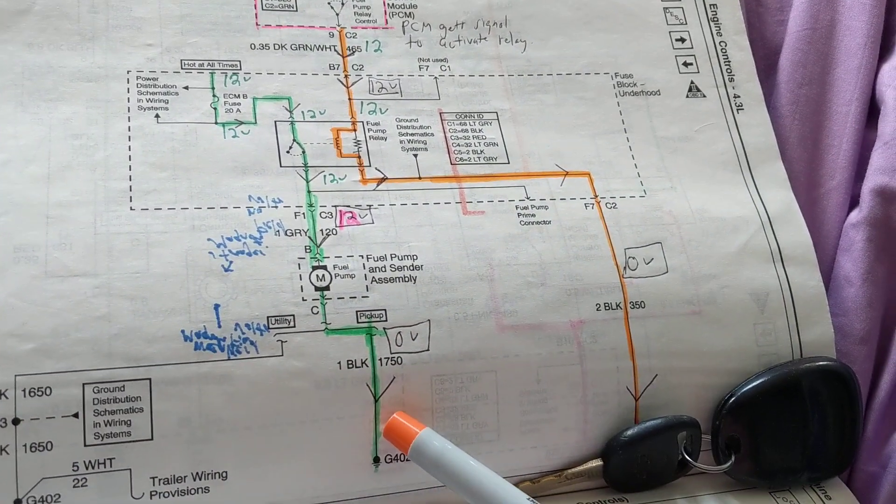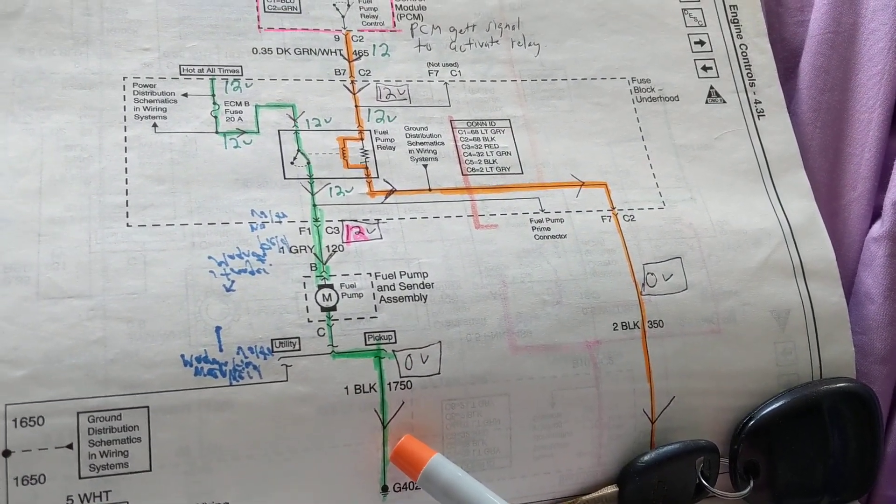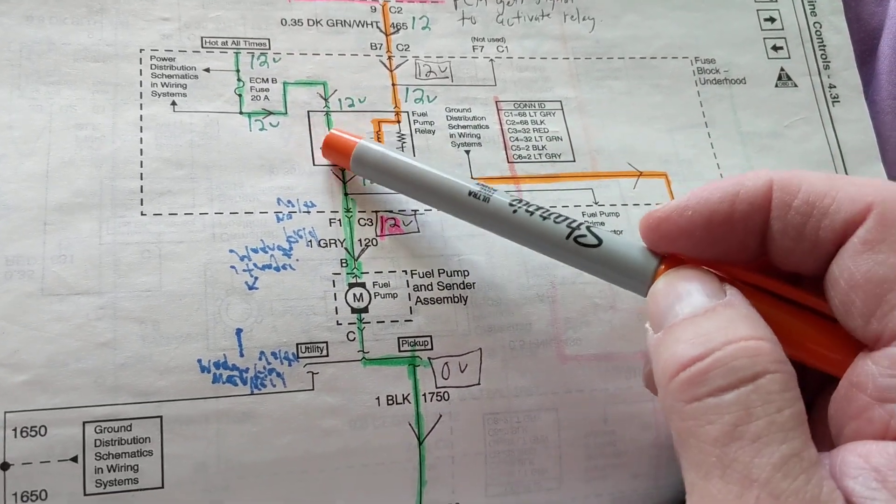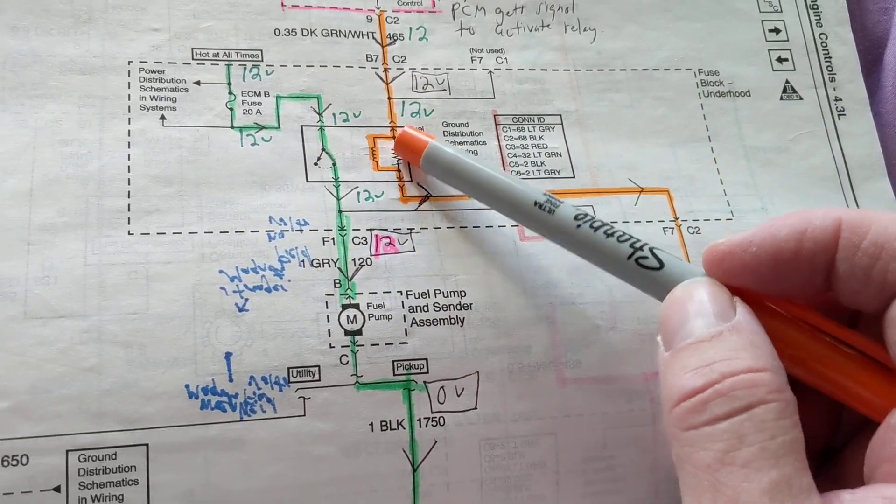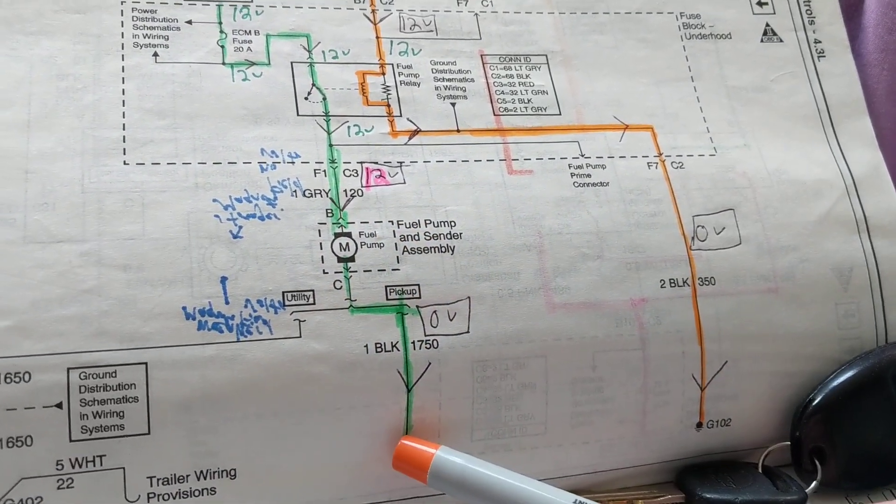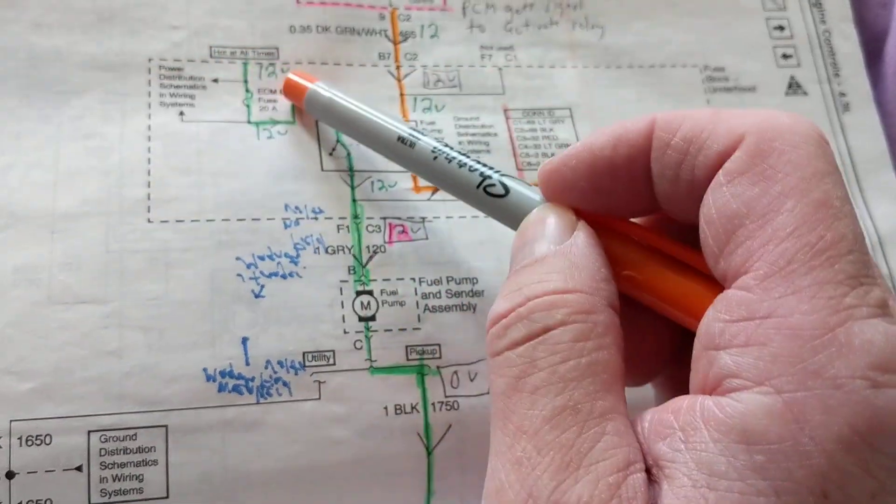On this side we don't have the computer controlling anything over here. As you can see, it's just the fuse, the 12 volts, this is activated as we know, and then fuel pump is activated over here going through ground back to the battery.